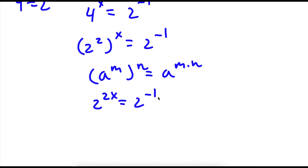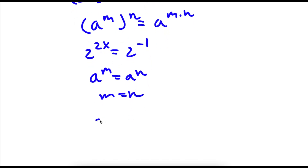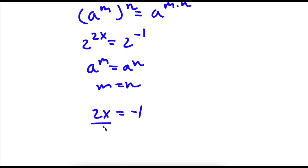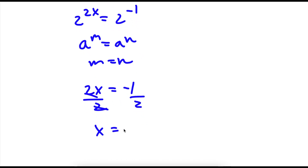And this equals 2 to the power of negative 1. Now if I have something in the form a to the power of m is equal to a to the power of n, this means that m is equal to n. So in this case, 2x is equal to negative 1. I can divide both sides by 2, and I have x is equal to negative 1 half.